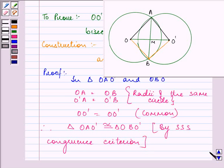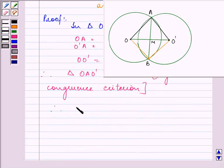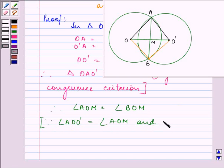So I can say that angle OAO' is equal to angle BOM and angle BOM is equal to angle BO'O dash.